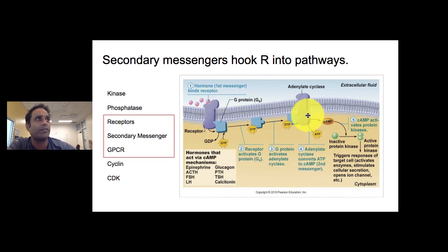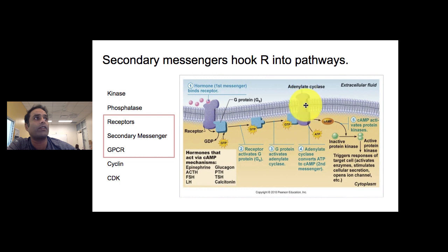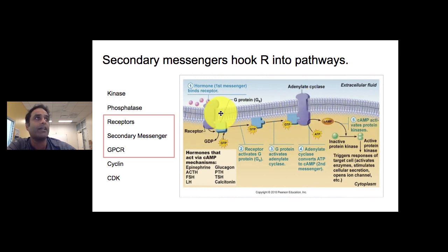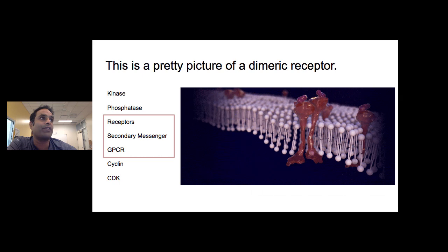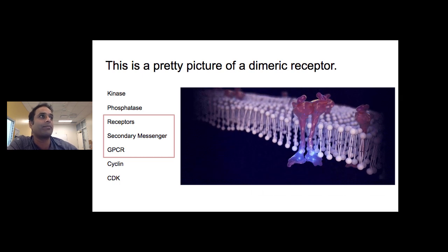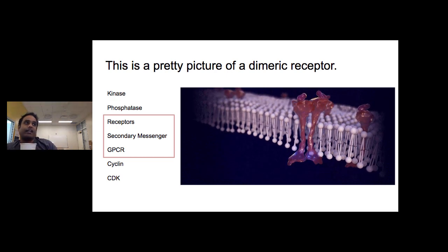GPCRs allow a cell to become sensitive to one thing and then hook into another system. The ligand that binds the receptor never directly activates the secondary system — there's an intermediate that connects the signal to it. Here is an animation of what a dimeric receptor looks like inside a cell: it has two parts, receives something from outside, changes shape, and signals something on the inside.